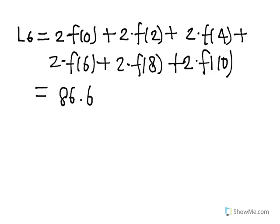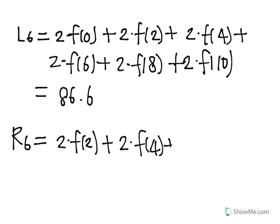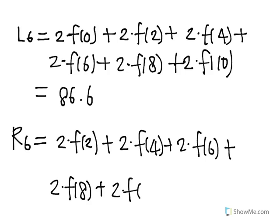Second part is to use right endpoints to find the area under the curve. So we do the same thing except we use right endpoints. Width times height, this time we start from 2 times f of 2 plus 2 times f of 4 plus 2 times f of 6 plus 2 times f of 8 plus 2 times f of 10 plus 2 times f of 12. Using this equation, you should get the answer of 70.6.